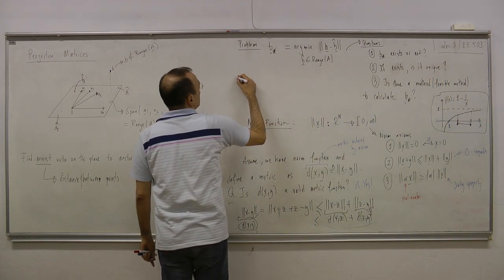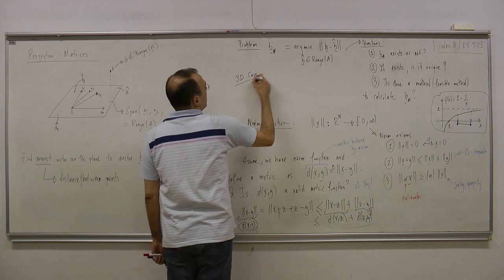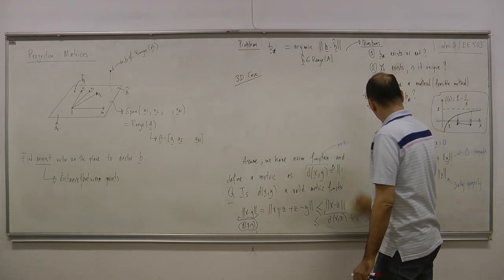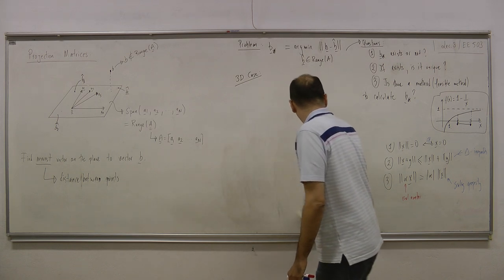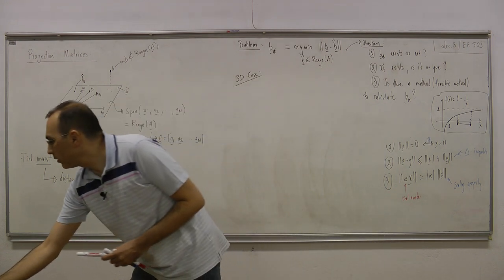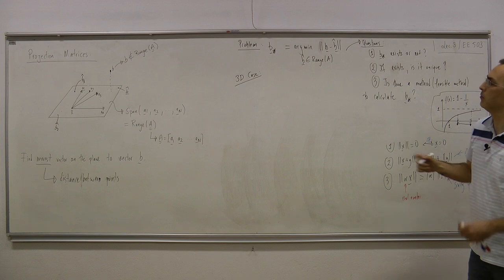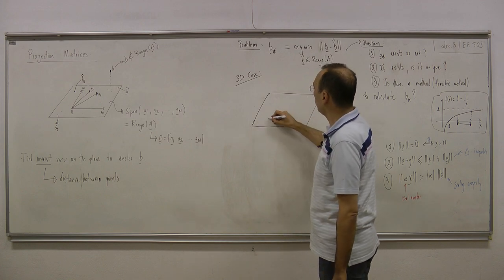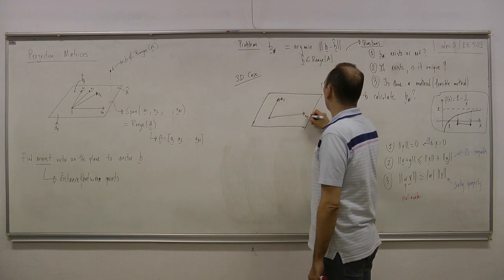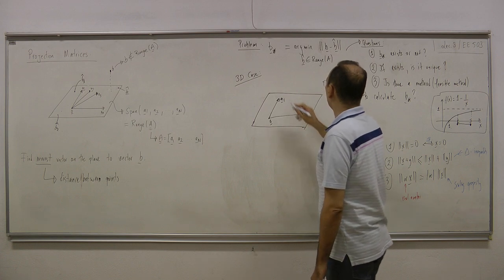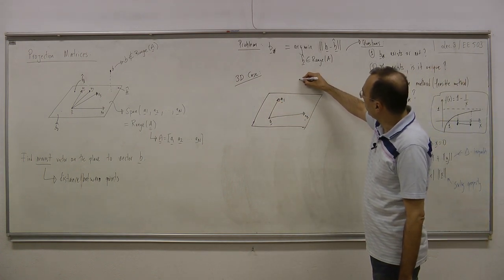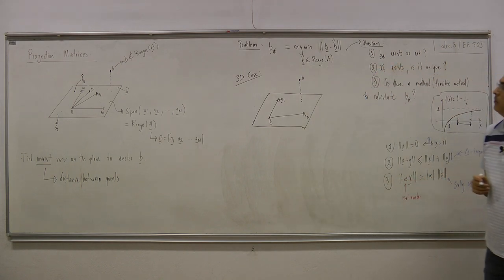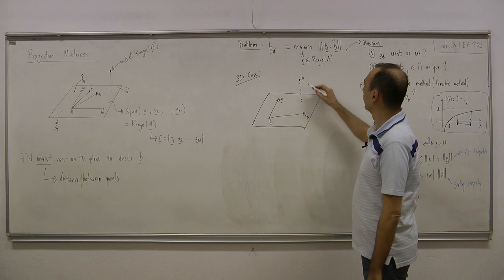Let's go back to the 3D case, which we are very familiar with because we want to use our everyday experience. I have only two vectors a1 and a2 emanating from the zero vector, and this is the span of a1 and a2. There is a third vector b. I am trying to find the optimal point at minimum distance to b on this plane.